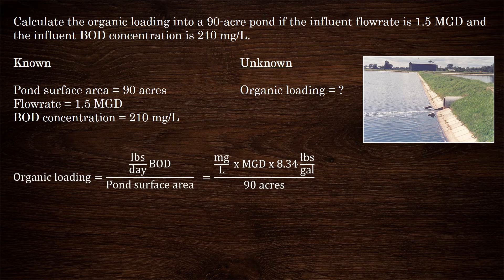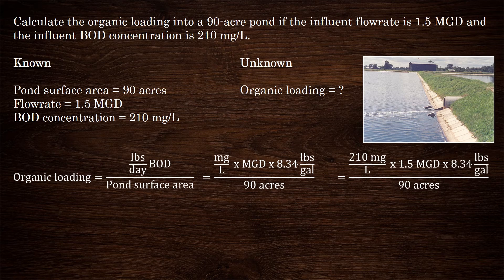We have milligrams per liter of BOD and mgd, the flow rate. We have the BOD concentration, 210 mg per liter, and the flow rate, 1.5 mgd. Let's plug in these two numbers into the top of this formula: 210 mg per liter multiplied by 1.5 mgd multiplied by the conversion factor 8.34 pounds per gallon, with 90 acres on the bottom.